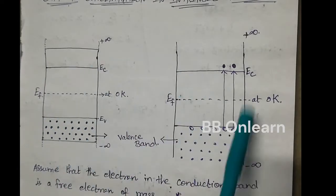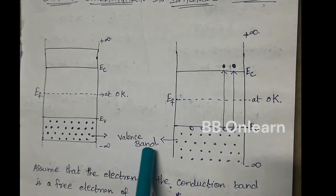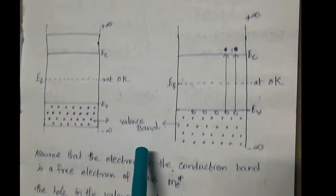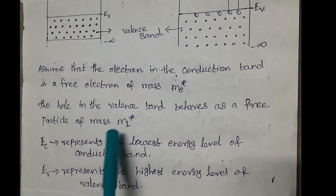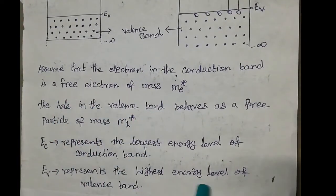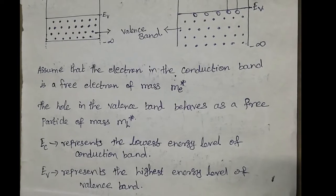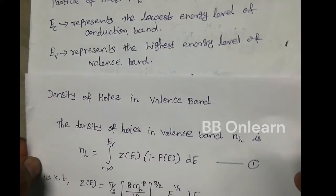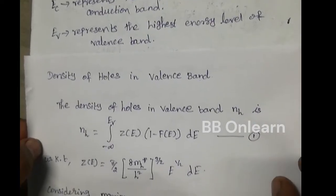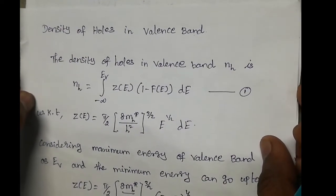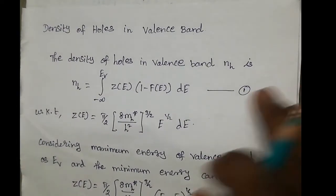We look at the electron in the conduction band — that diagram is the same as before. We now state our assumptions regarding the density of holes in the valence band.